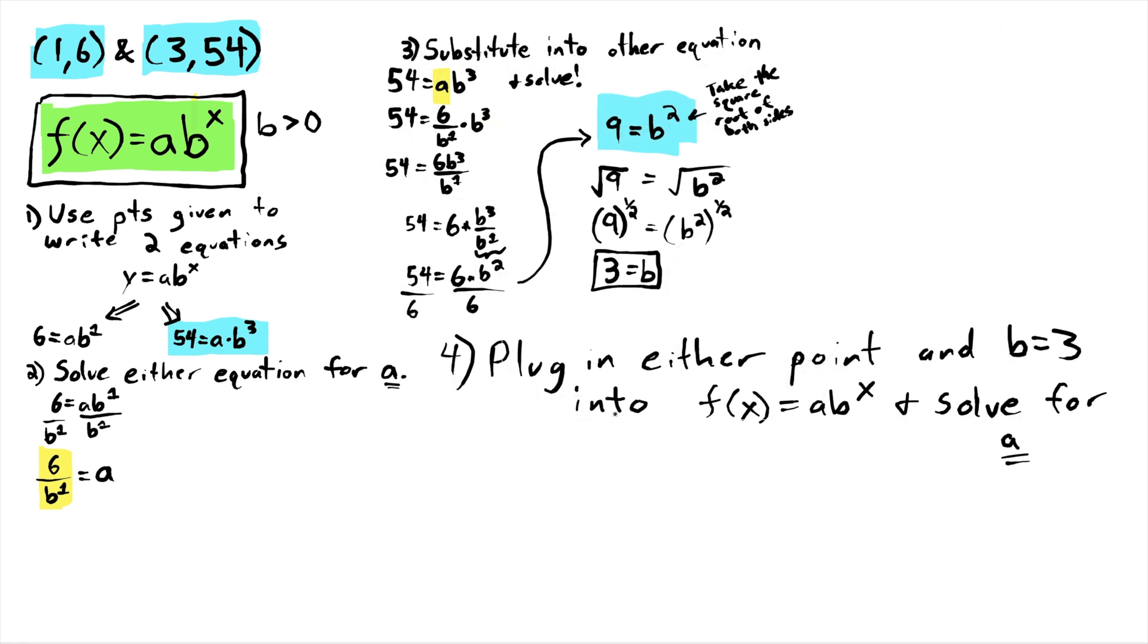So step 4, we are going to take our exponential equation format, and we're going to substitute either point that we were given. It doesn't matter. You can choose. I'm going to pick this first point because it has the smaller numbers. So now I just need to solve for a, and I get a = 2. Because these cancelled, and 6 divided by 3 was just 2.